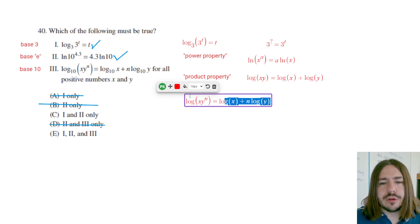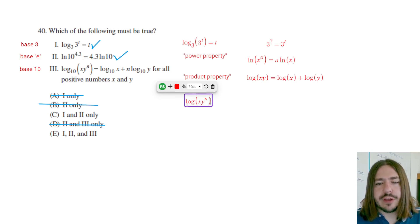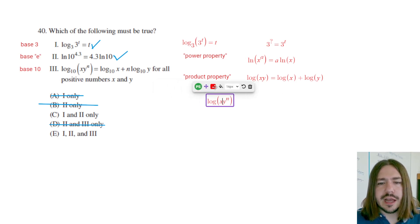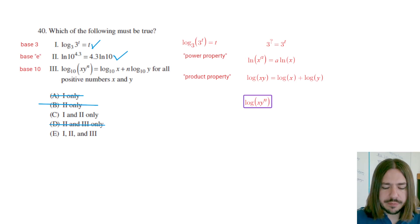Okay, so first thing I'm going to do is say okay, so I've got log of x times y to the n. So I'm going to use the product property to first split this up. So I'm going to say that this is log of x plus log of y to the n.